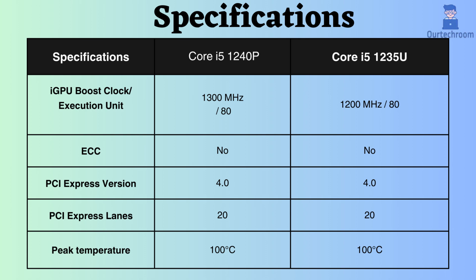Neither processor supports ECC, making them unsuitable for critical systems such as servers and workstations. Both support PCI version 4 and feature 20 PCI lanes. They both have a maximum safe operating temperature of up to 100 degrees Celsius as specified by Intel, and exceeding this threshold may result in damage or instability.